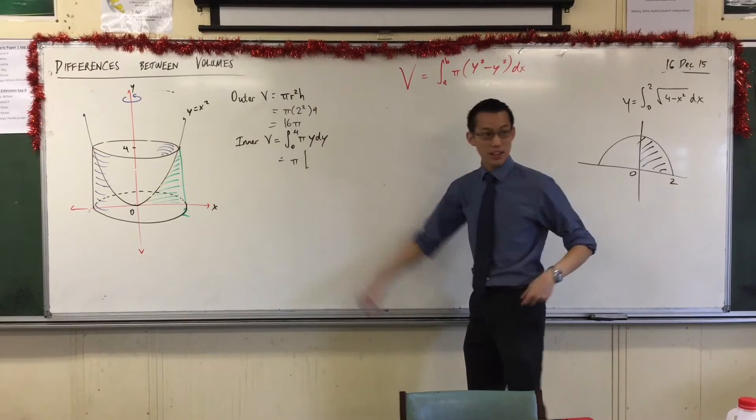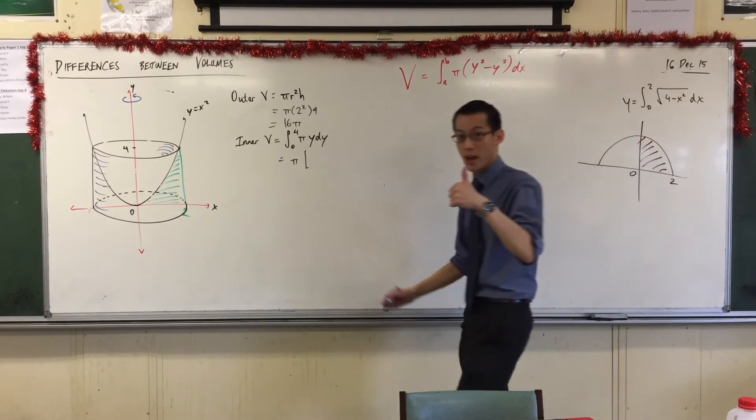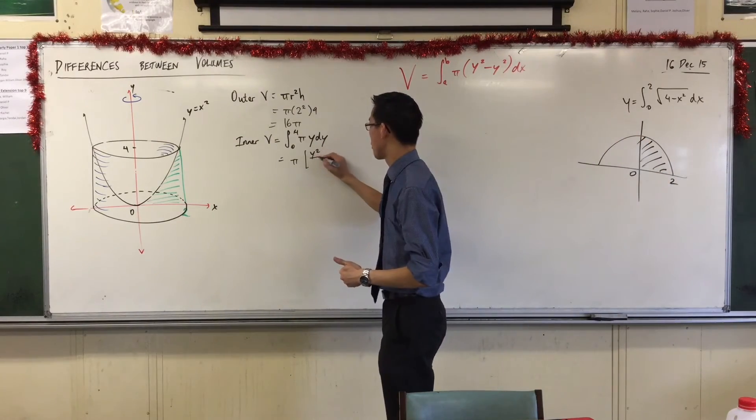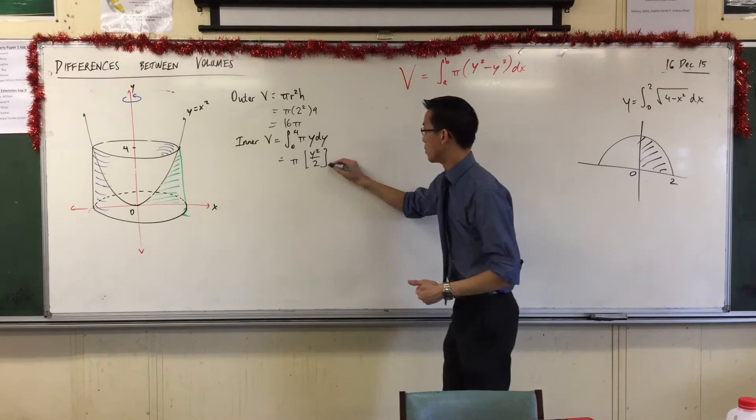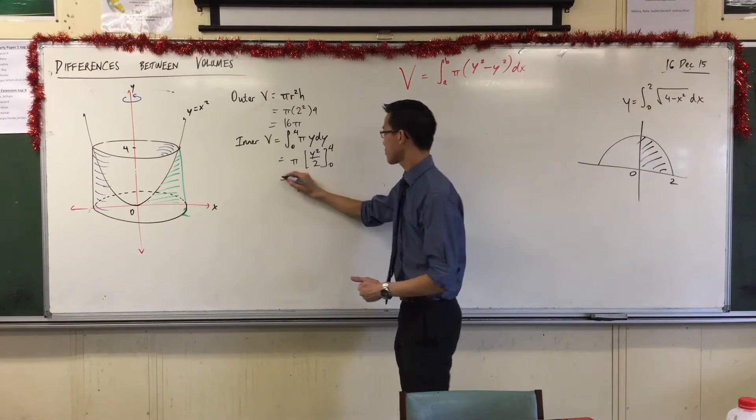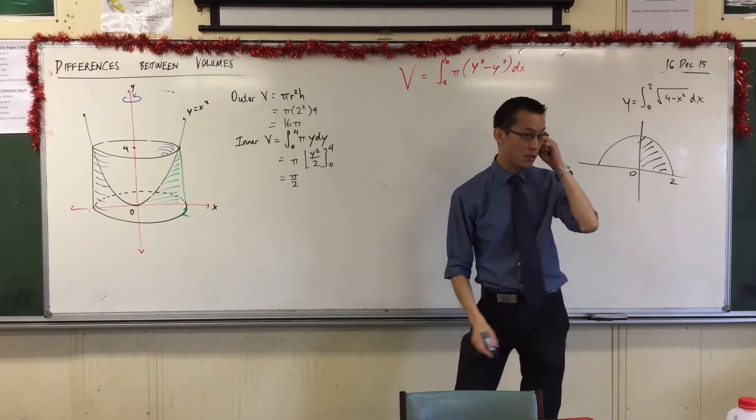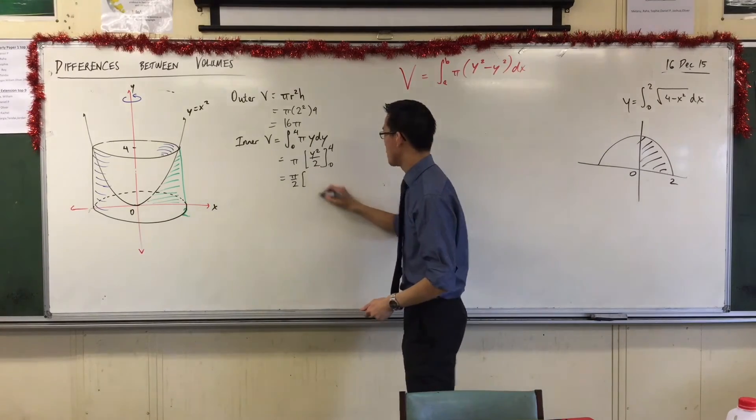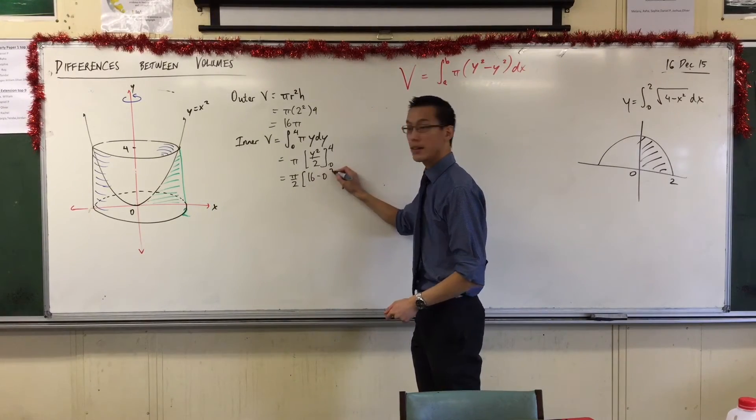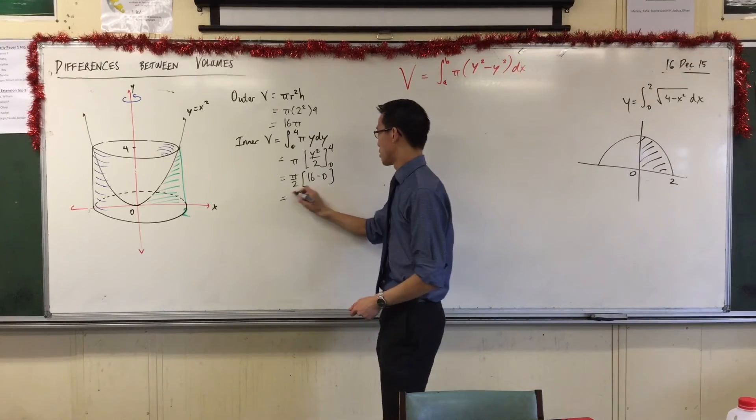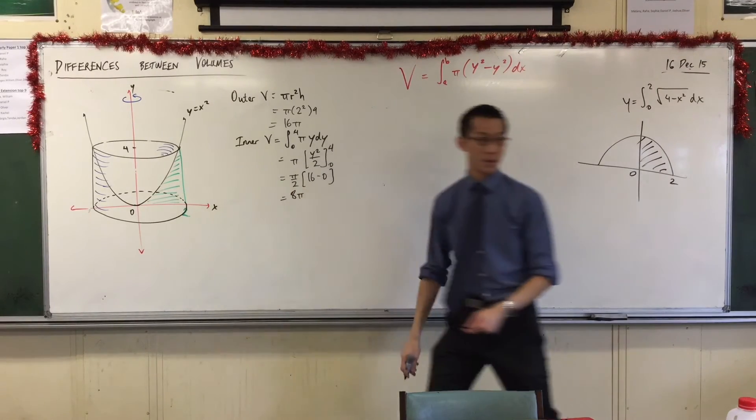So this also is a very easy primitive to state. I've got that pi out the front. y is going to integrate up into y squared on 2. Yep, half y squared. That's fine. From 0 to 4. I'm going to pull that divided by 2 out the front. And this gives me 16 take away 0. So this is 8 pi.